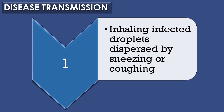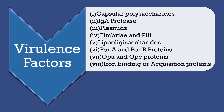Neisseria meningitidis infections are mainly transmitted by inhaling infected droplets dispersed by sneezing or coughing. Some of the virulence factors responsible for causing Neisseria meningitidis infections are: capsular polysaccharides, IgA protease, plasmids, fimbriae and pili, lipo-oligosaccharides, OPA and PORB proteins, OPA and OPZ proteins, and iron binding or acquisition proteins.